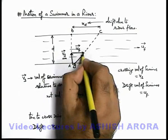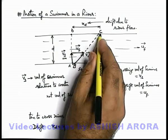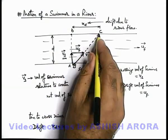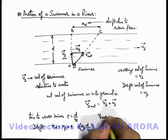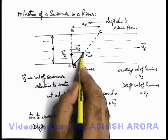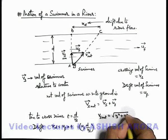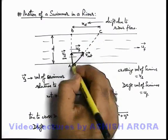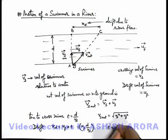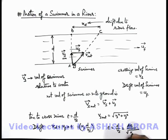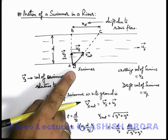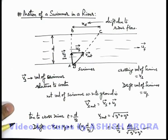If we wish to calculate the net velocity with which the swimmer is effectively moving from point A to point C, this net velocity magnitude can be given by the velocity triangle as the square root of v_s squared plus u_f squared. The time taken to cross the river, already calculated as d upon v_s, can also be calculated as AC divided by the square root of v_s squared plus u_f squared. Be careful about this whole analysis of motion of a swimmer in a river, as we will discuss several examples based on this concept.